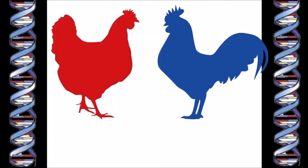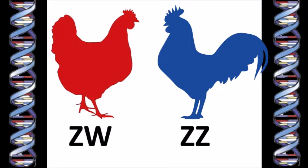But in chickens, as in all other birds, the male is the one who has two of the same chromosomes, and the female has two different ones. The male bird has two Z chromosomes, and the female has one Z and one W chromosome.